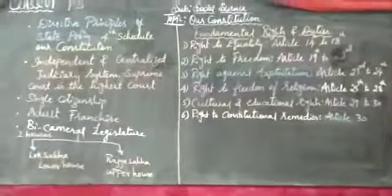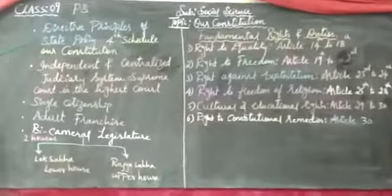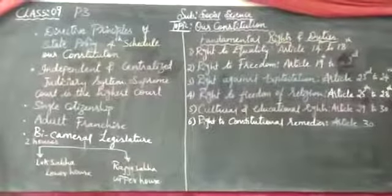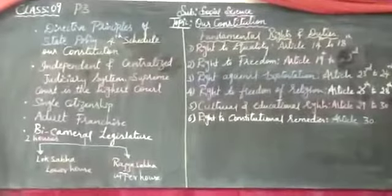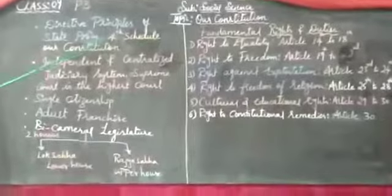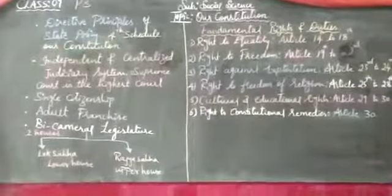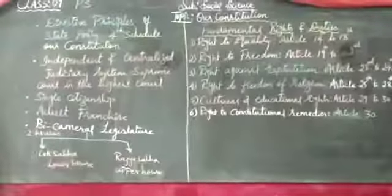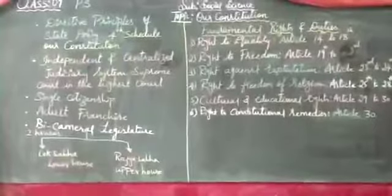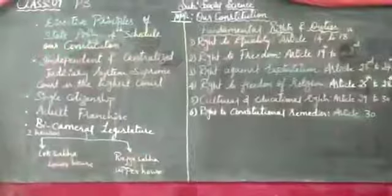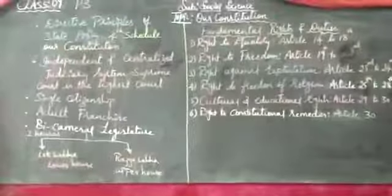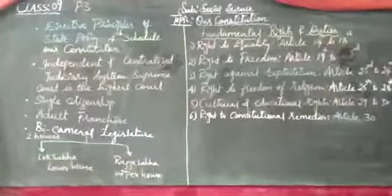Now, when we look at the Directive Principles of State Policy, it is mentioned in our constitution — in Part IV of our constitution. We have learned how many chapters, articles, and schedules are present in this lengthy written constitution. This Directive Principles of State Policy comes under Part IV.